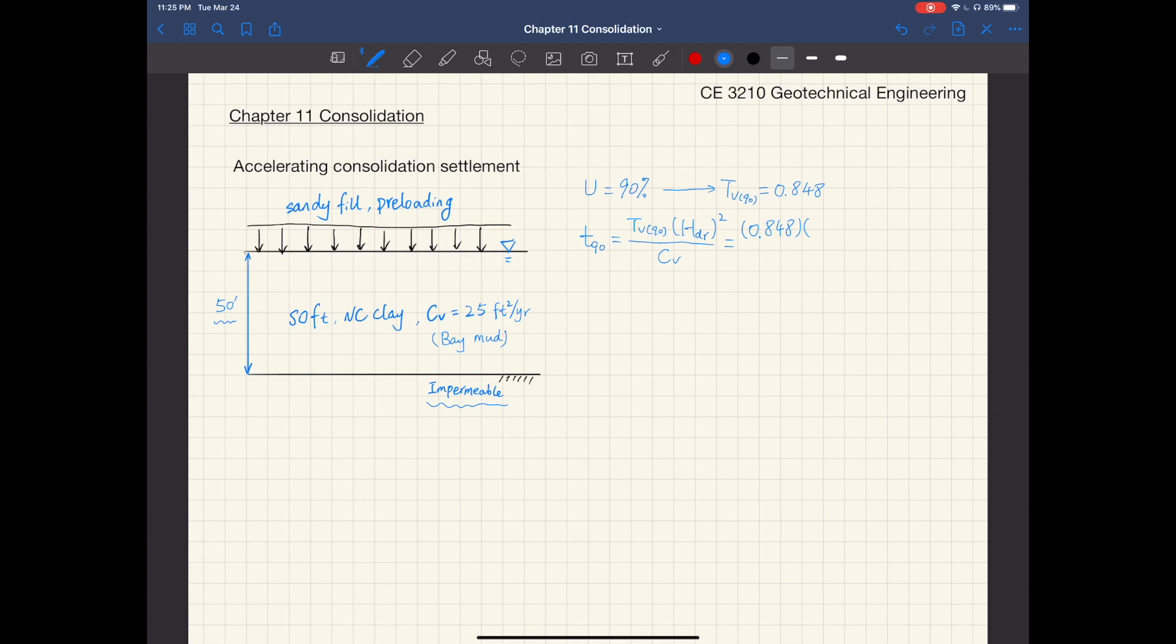H_DR equals the height of this clay layer, 50 squared divided by C sub V of 25. If you work out this number, you will get T90 equals 85 years.